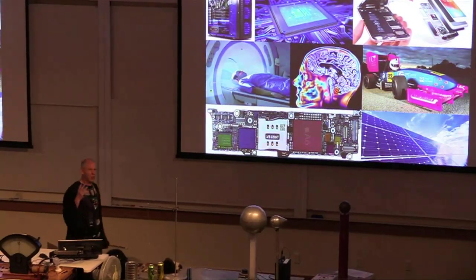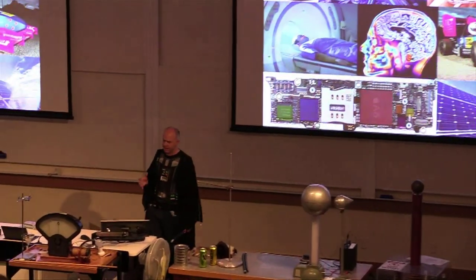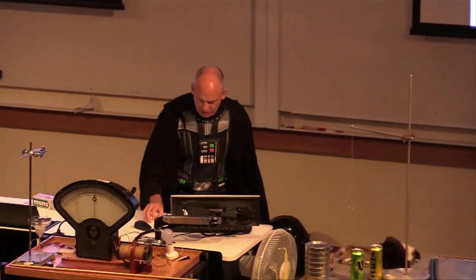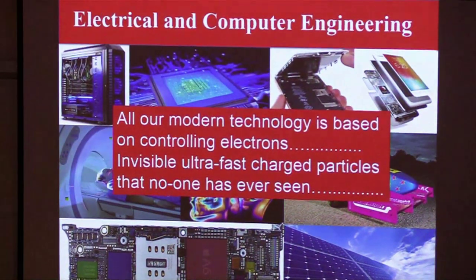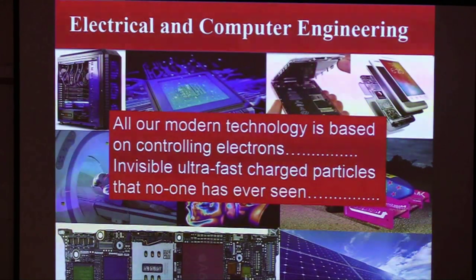What do all these things have in common? What does all modern technology, virtually everything you rely on, have in common? It's all based on controlling electrons. All our modern technology is based on our ability to control electrons. And what are electrons? They're invisible, ultra-fast, charged particles that no one's ever seen.